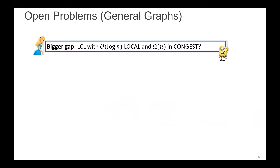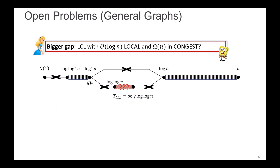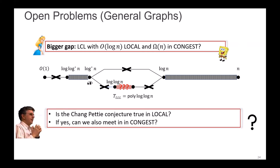To conclude, one immediate open question is whether we can get an LCL problem with a bigger gap — we could not manage to get one with small complexity in the LOCAL model and linear complexity in the CONGEST model for unbounded degree graphs. But the main open question is the complexity of LLL in the CONGEST and LOCAL models. The conjecture by Chang and Pettie says there is nothing in the uncertain area, meaning both endpoints collide. But answering this conjecture in the LOCAL model does not automatically mean we can also answer it in the CONGEST model.